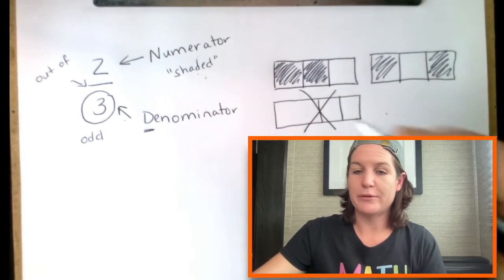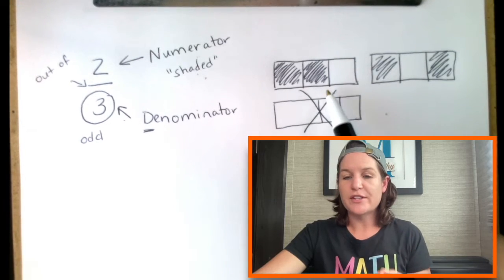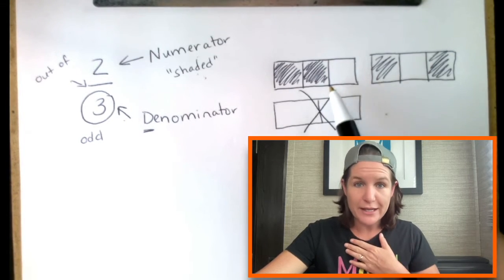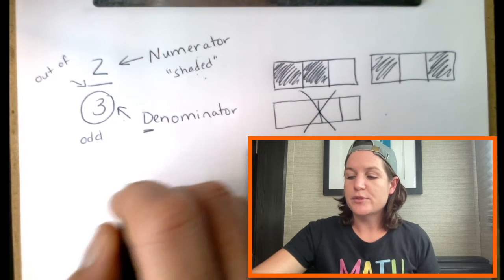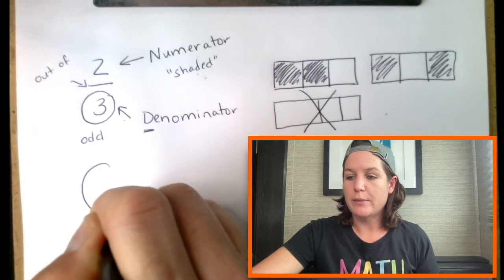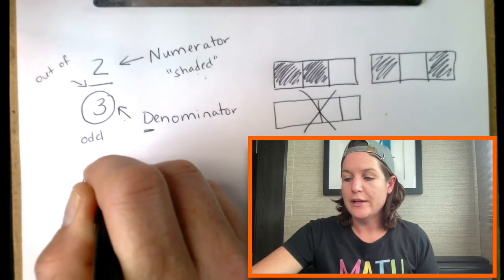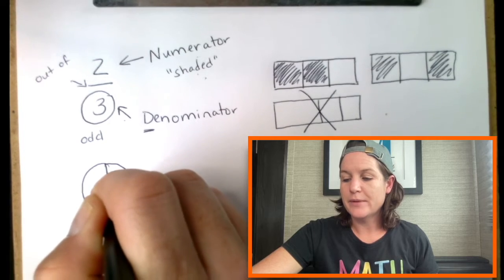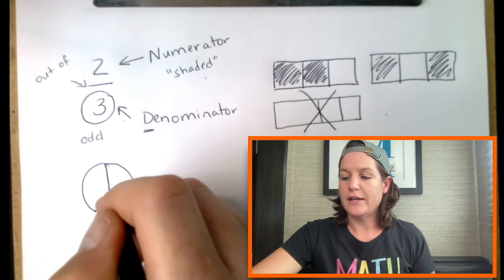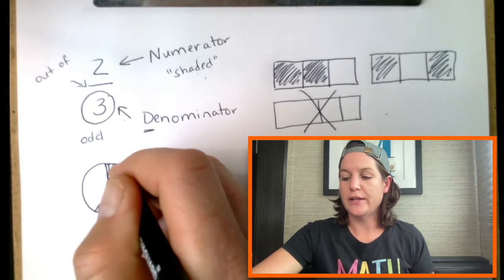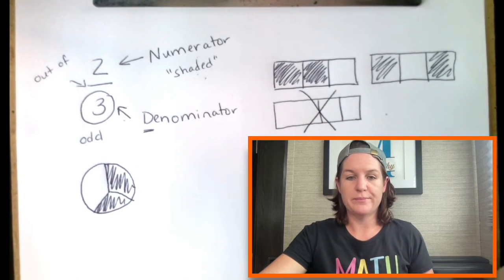I'm going to eliminate that one right there because we don't want them drawing them like that. I know I mentioned that rectangles are the easiest, in my opinion, to draw. Some students like to go ahead and model with circles, which is great, but sometimes the pieces come out a little wonky. And again, shading quickly, two out of three.